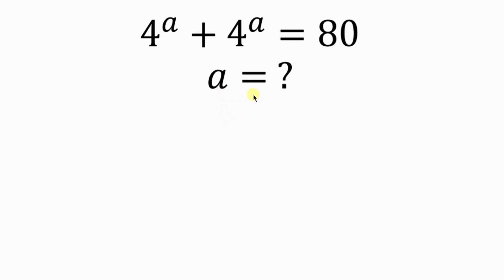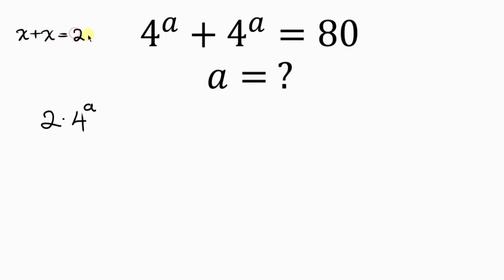Let's find the value of a for which 4 to the a plus 4 to the a is equal to 80. Now, 4 to the a plus 4 to the a is 2 times 4 to the a. This is just like adding x plus x, which gives 2x. This is equal to 80 on the right-hand side.